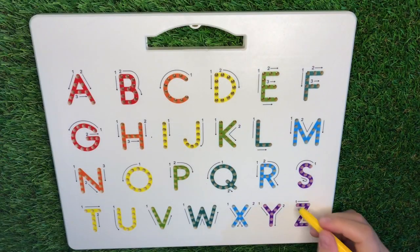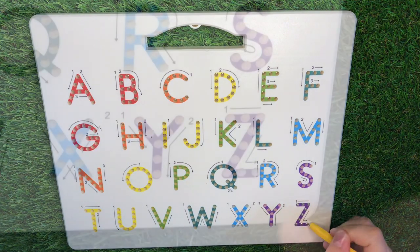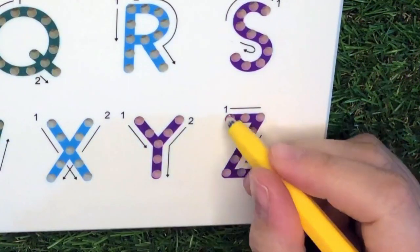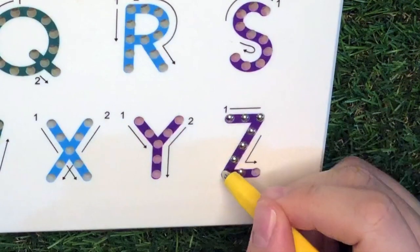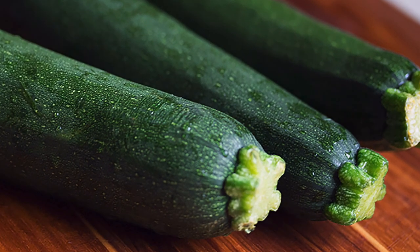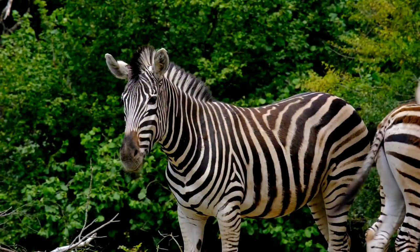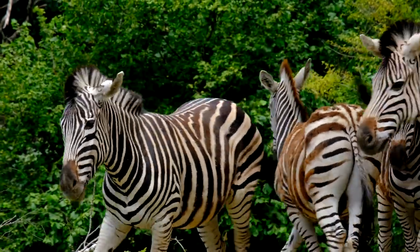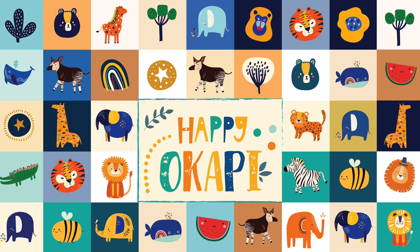Finally, last letter. Letter Z. Across, slant down, and across. Z is for zucchini, zero, and zebra. Great job, kids! See you next time!